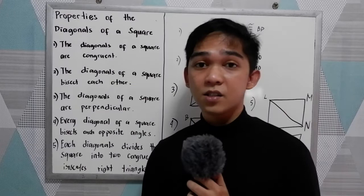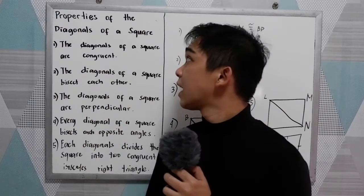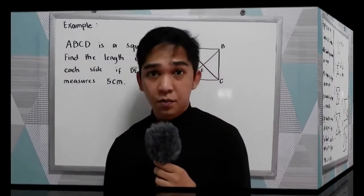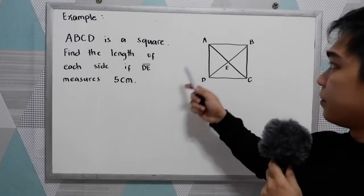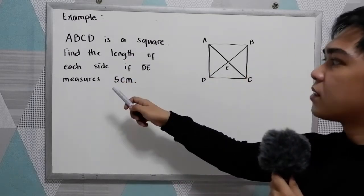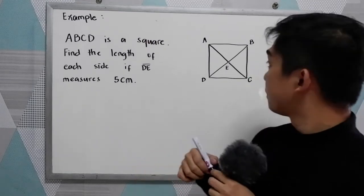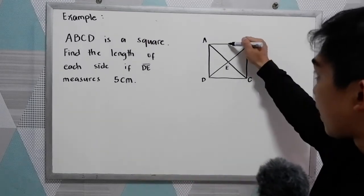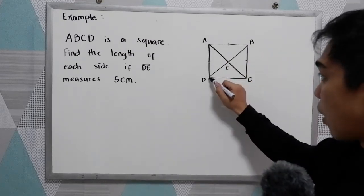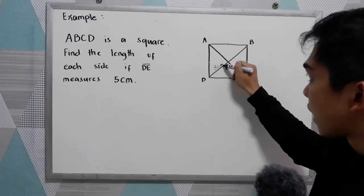Now let's have exercises or examples about the properties of the diagonals of a square. Now let's have our example. ABCD is a square. Find the length of each side if DE measures 5 cm. So we're going to find the measure of each side of our square. Our given is DE which is 5 cm.